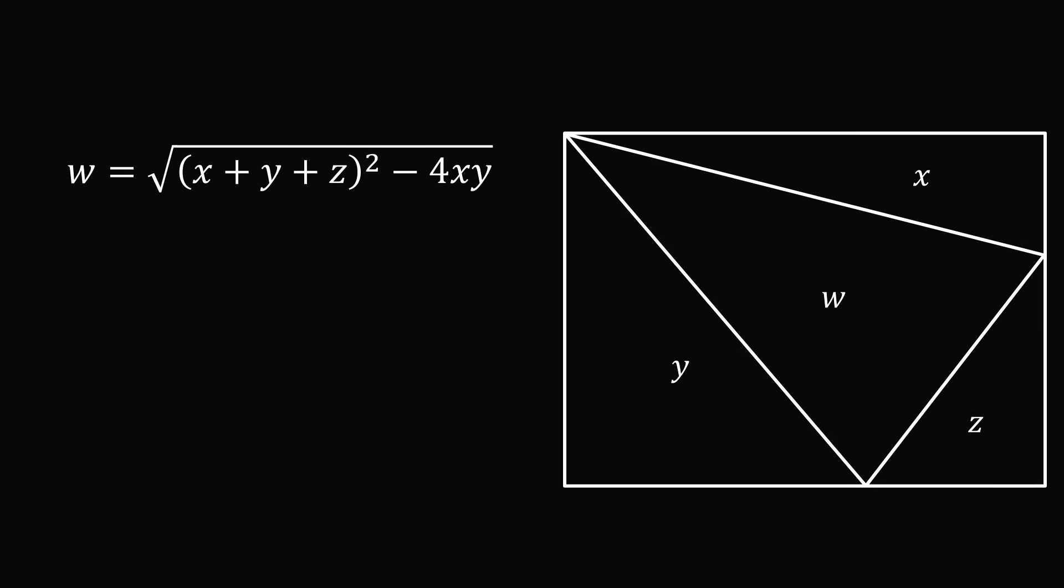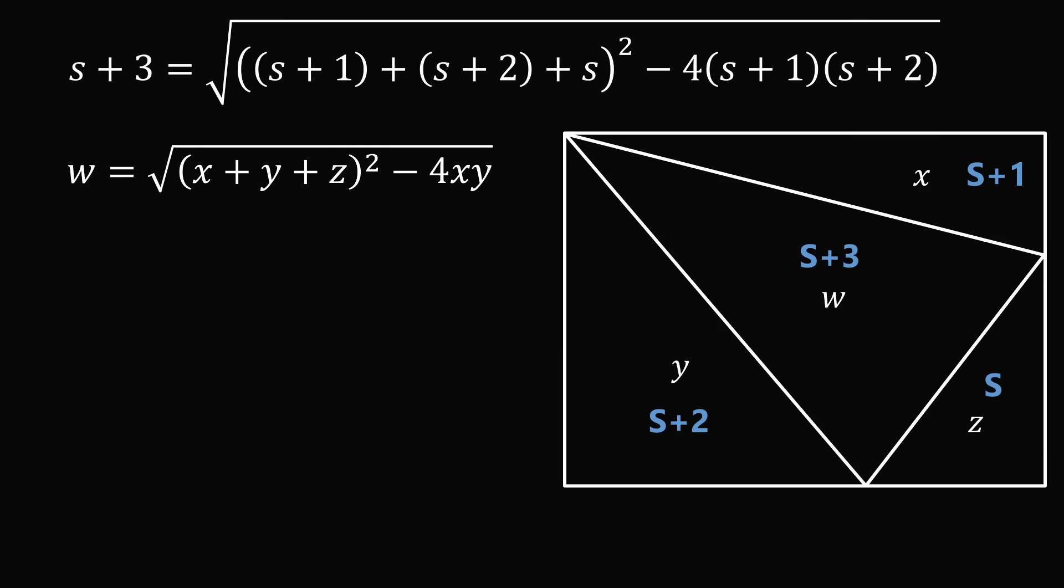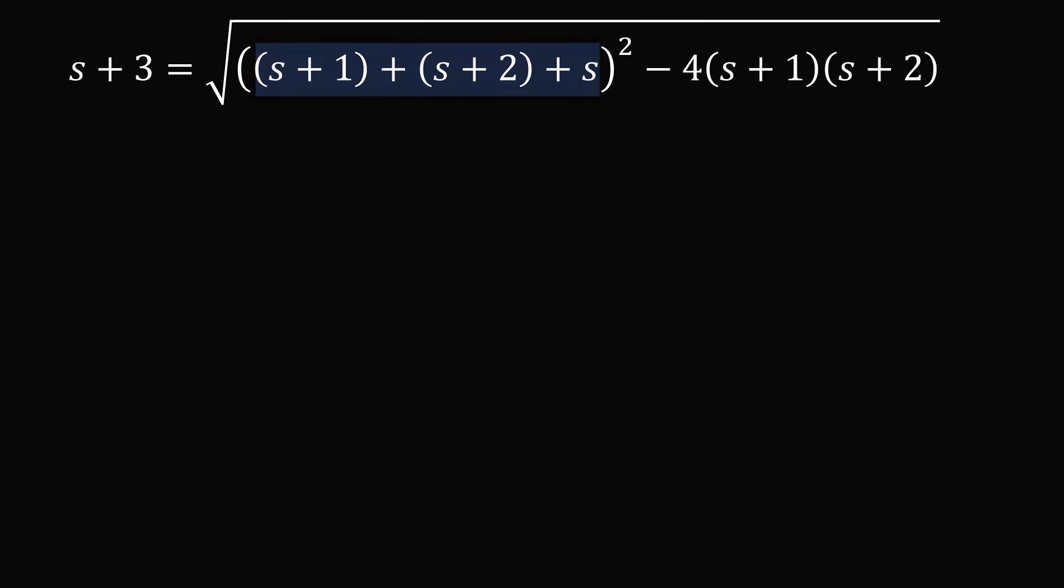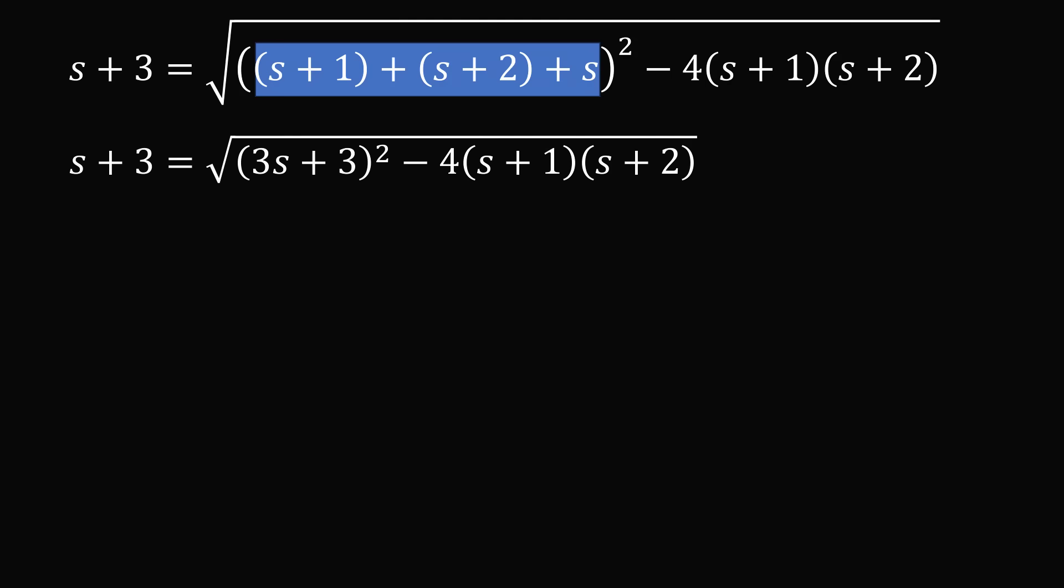We now just need to return to the original question. We had that X was equal to S plus 1, Y was equal to S plus 2, Z was equal to S, and W was equal to S plus 3. We substitute those into the equation, and we end up with the following. So all we need to do is solve for S in this equation. So let's just simplify this equation. We have S plus 1 plus S plus 2 plus S. This will simplify to be 3S plus 3.